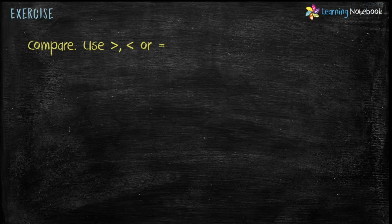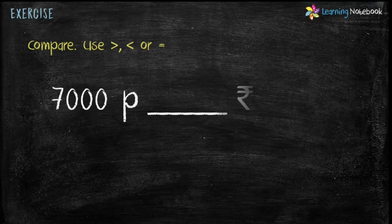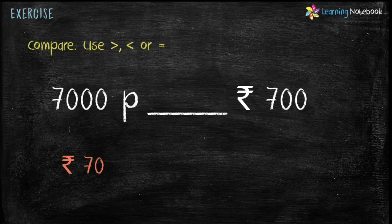And in the end, let's compare 7,000 paise and Rupees 700. 7,000 paise can be written as Rupees 70. Therefore, 7,000 paise is less than Rupees 700.